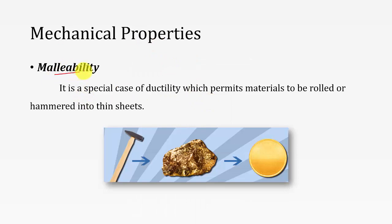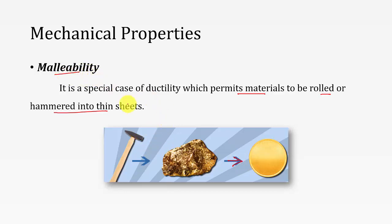Malleability is a special case property — it is the property that permits the materials to be rolled or hammered into thin sheets. If you can hammer a metal into a small coin using your hammer, that property is called malleability. It allows impact loading by the hammer.